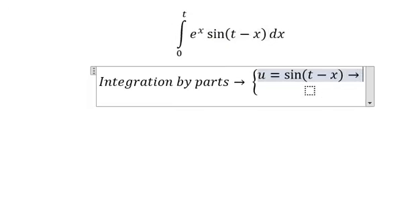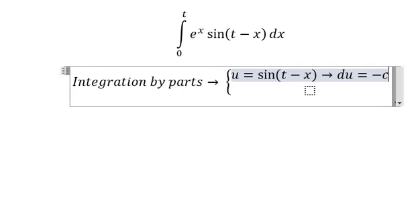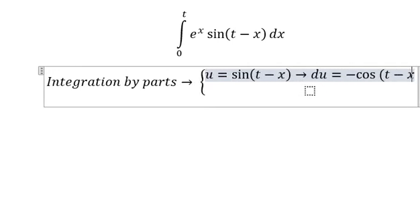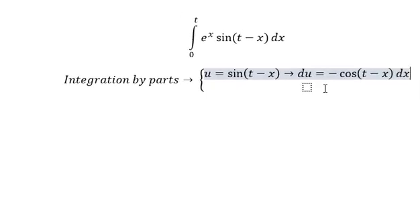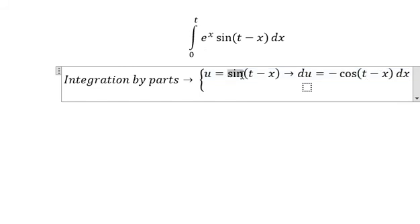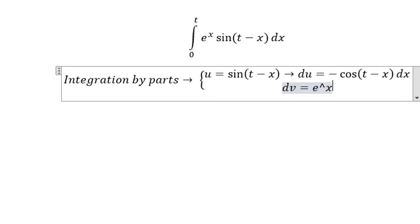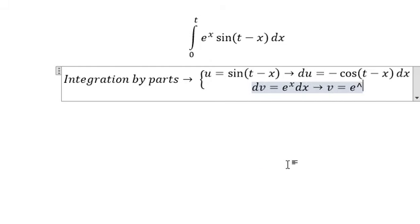If we do the first derivative, you will get negative cosine of t minus x dx. Why? Because if we do the first derivative of sine, you will get cosine x, but if we do the first derivative of t minus x, we have the negative x in here. That's why we get negative. dv equals to e to the power of x dx, so v equals to e to the power of x.